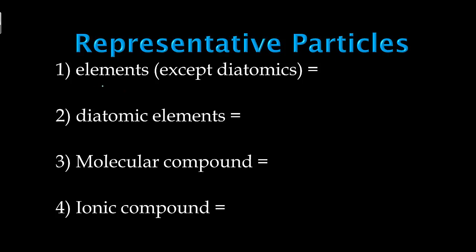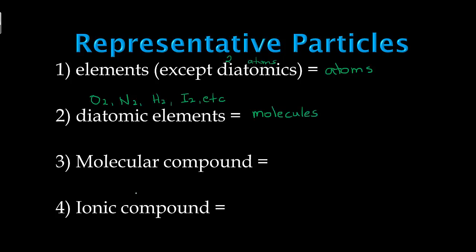Now let's talk about representative particles. Elements, except diatomics — and remember 'di' means two atoms — have atoms as their representative particles. The representative particles of diatomic elements, such as O2, N2, H2, and I2, are molecules, because they are covalently bonded together. A molecular compound's representative particle is also called a molecule. Ionic compounds' representative particles are formula units.